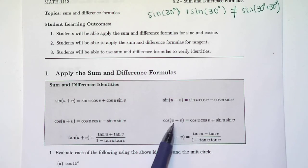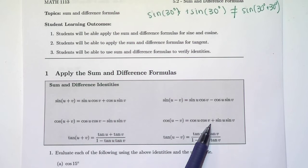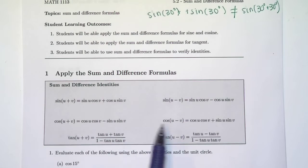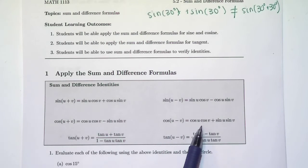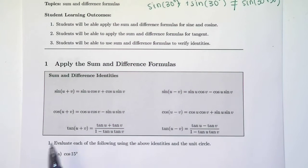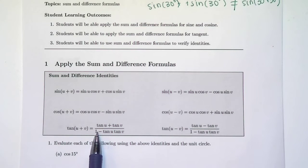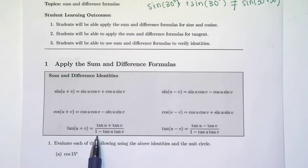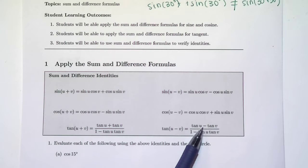And so when we're subtracting with cosine, you change that minus to addition. So when we're with cosine and we have a sum, we actually subtract. And when we have a difference, we add — not convenient. And then with tangent, this one looks completely different from all of them, but it should make sense that it's a quotient. So when we're adding inside of tangent, you take tangent of the first angle plus tangent of the second angle divided by 1 minus tangent of the first angle times tangent of the second angle. And when we subtract inside of tangent, you just change that to a minus sign.